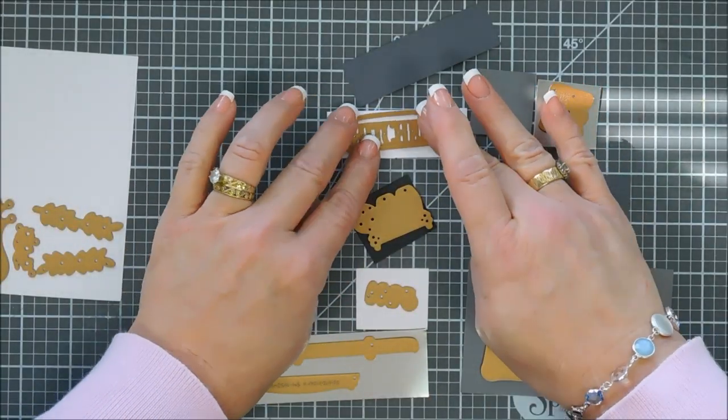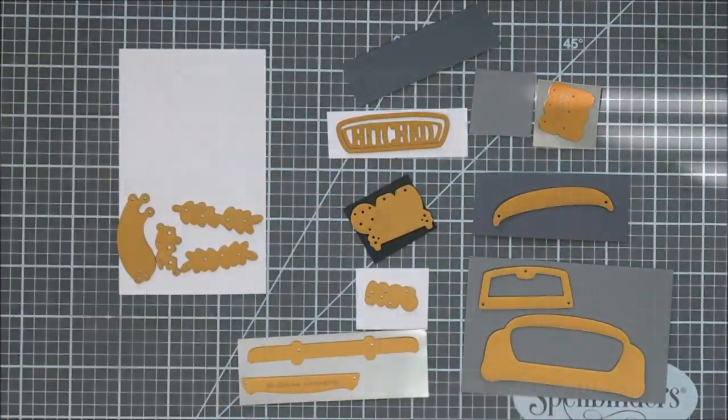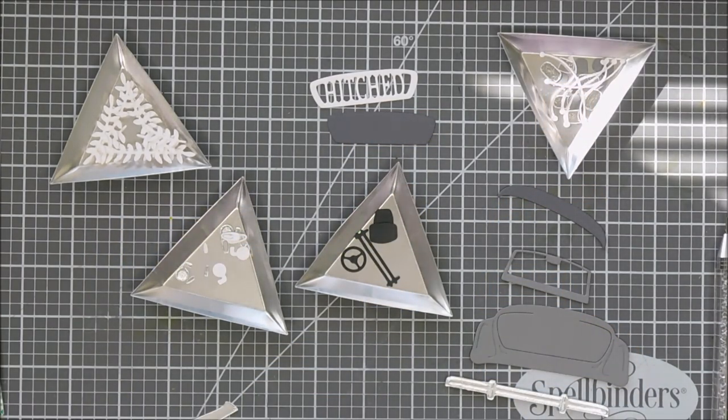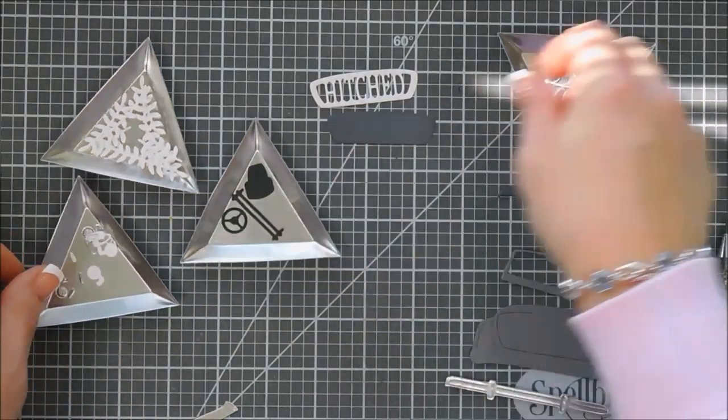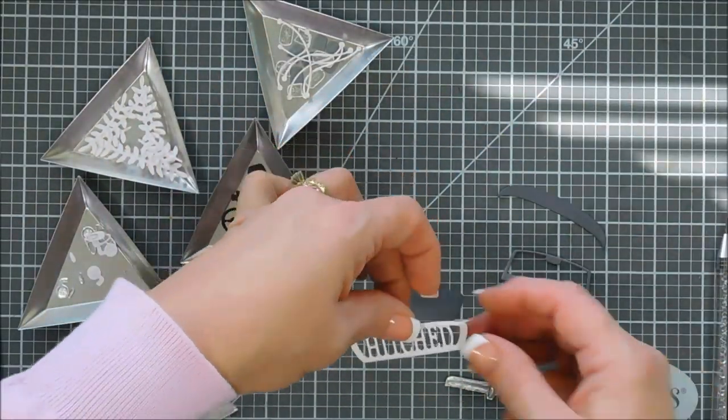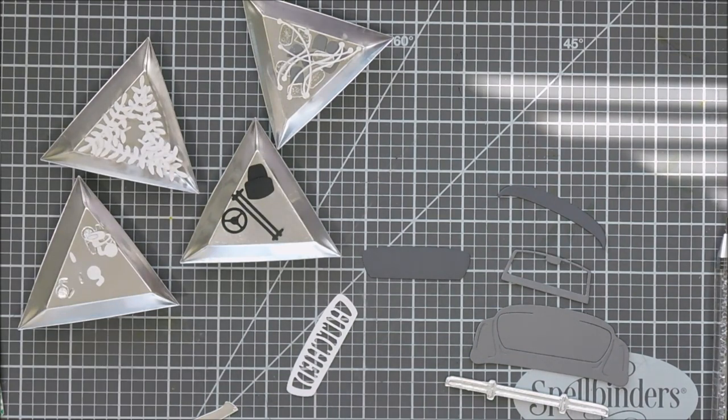Next we're going to bring in the Hitched and we'll die cut out our sentiment there with the darkest gray. Again that is the Rock Candy. And then we're going to die cut it out with the whipped cream also because we're going to layer both of them together.